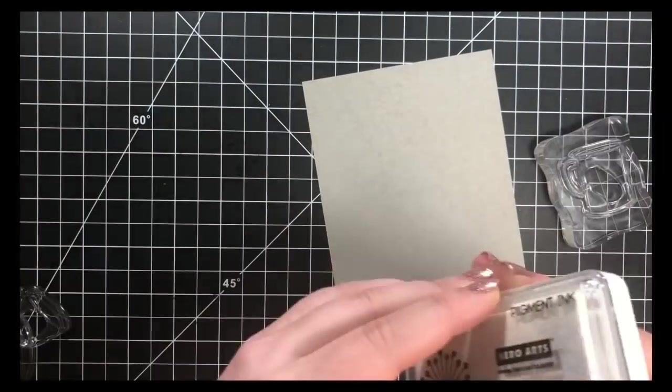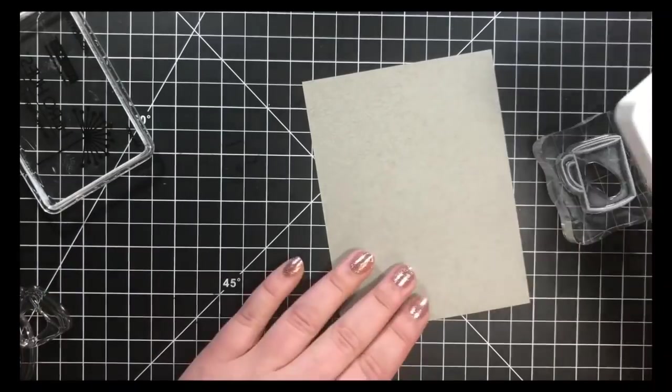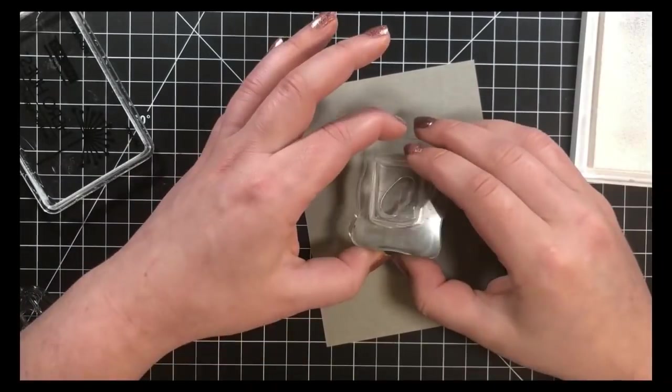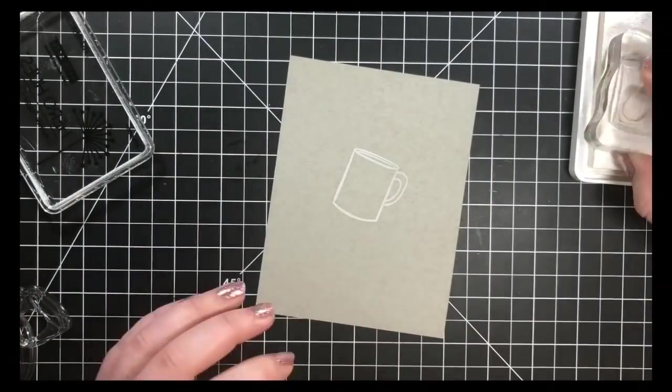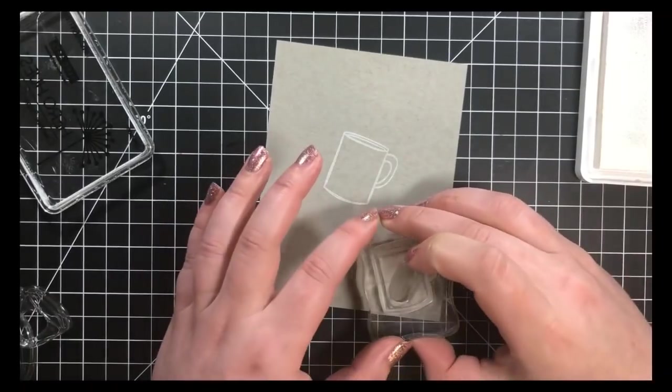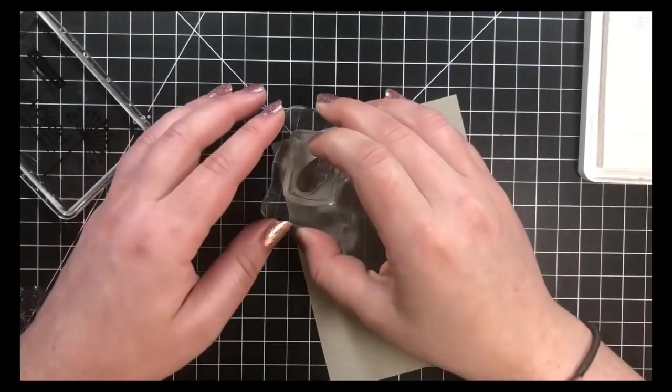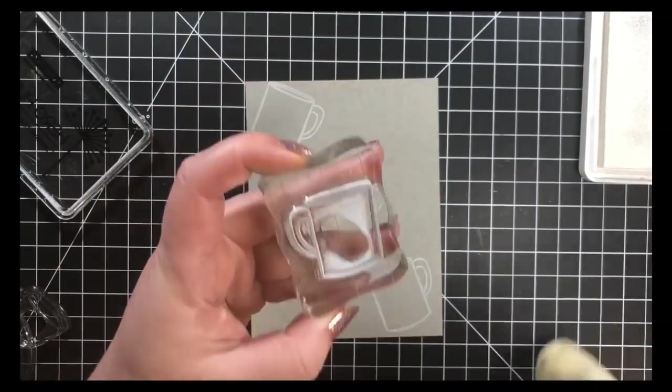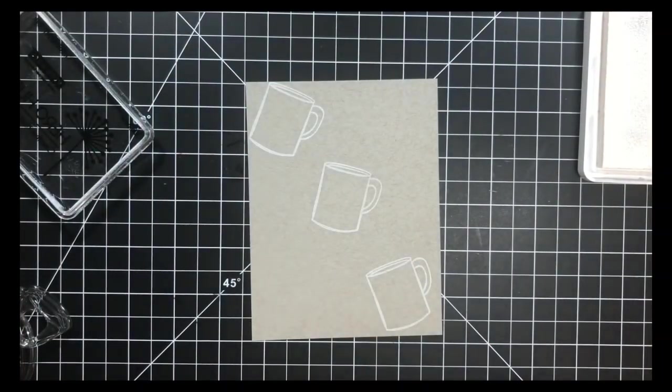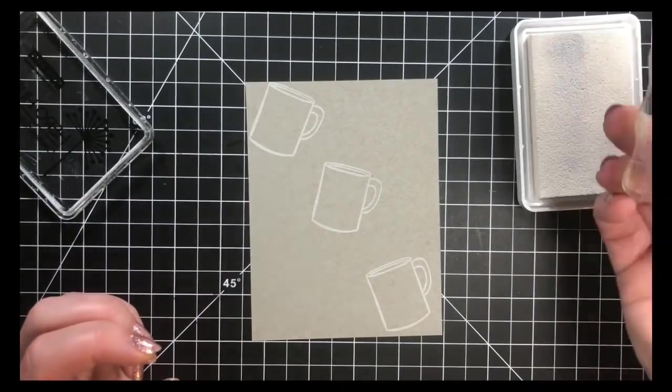I'm picking out a few images here from the stamp set and I'm going to be stamping my images scattered throughout the entire panel. I'm not really worried about going off the edge here because I know I'll be trimming down my panel in the end. This is a pigment ink, so you want to make sure that you give it a few minutes to dry before you move on with your coloring.